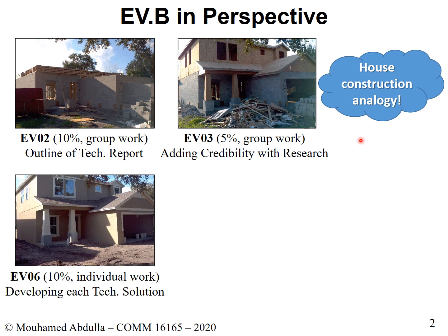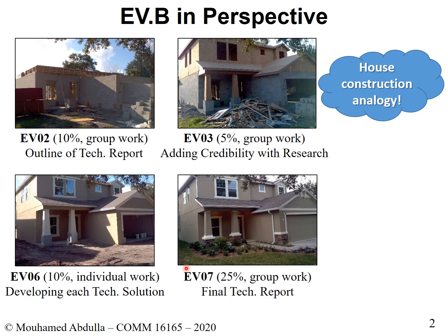After EV3, we moved to EV6, which was individual work. Every student was expected to develop their own technical solution independently. In terms of the analogy, this is like constructing the different rooms inside a house — the kitchen, family room, living room, basement, and so on. Then in EV7, you had to bring it all together — merge all the EV6s, massage the writing so it appears as though written by one person, and make it coherent, consistent, and unified. That was the final group report.